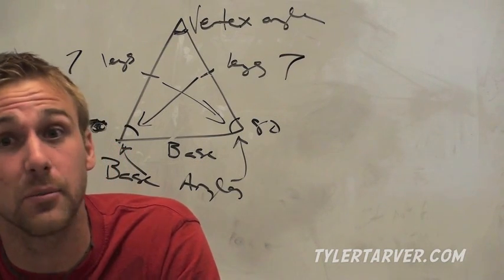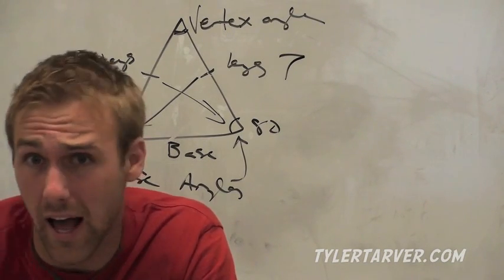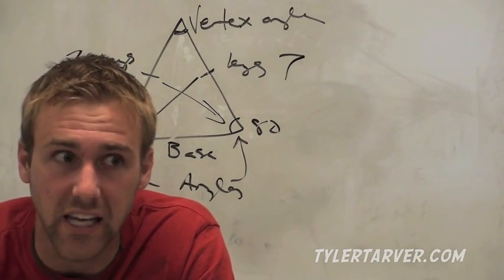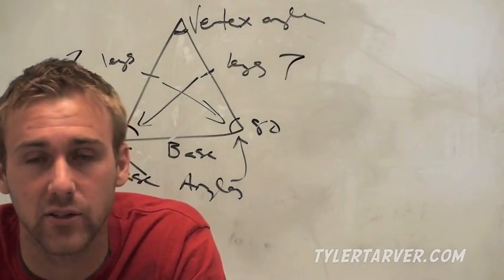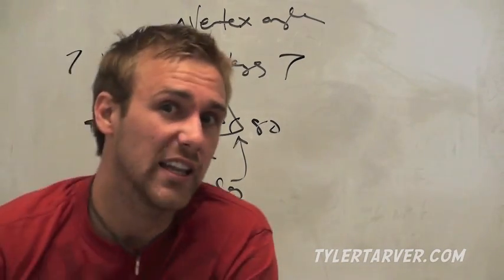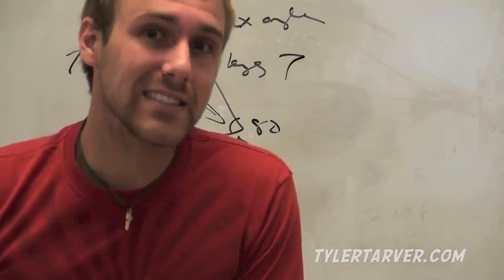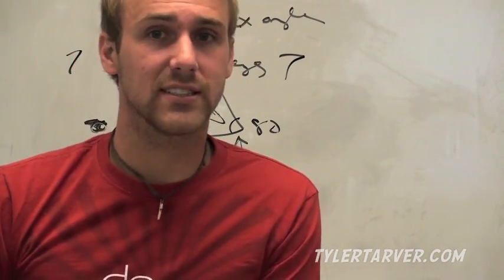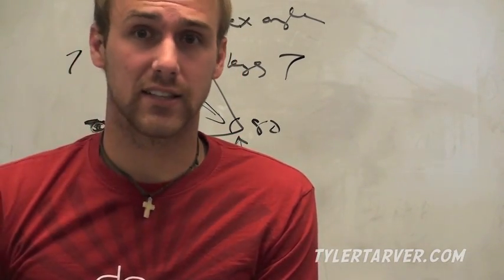Now, equilateral. A lot of people mix this up with equiangular. Equiangular means the angles are all equal. Equilateral means all the sides are equal — so if it's equilateral and one side is seven, then all three sides are seven.